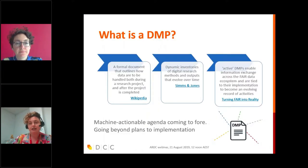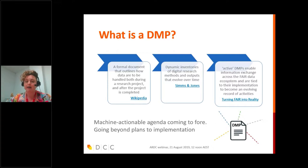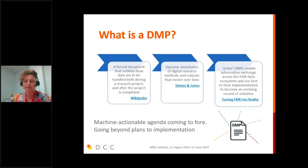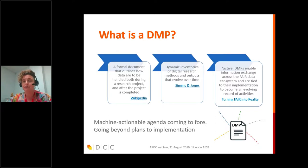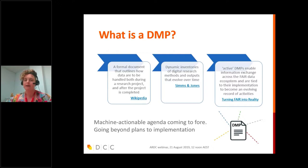A DMP is a formal document which outlines how research data is going to be handled both during the project and after. In the UK and US context, data management plans have often come up when people are applying for funding as part of a grant application. What we're seeing is that people want to make sure there are proper benefits from data management plans and that it's not this kind of static document. So a second definition talks about dynamic inventories of research methods and outputs that evolve over time.